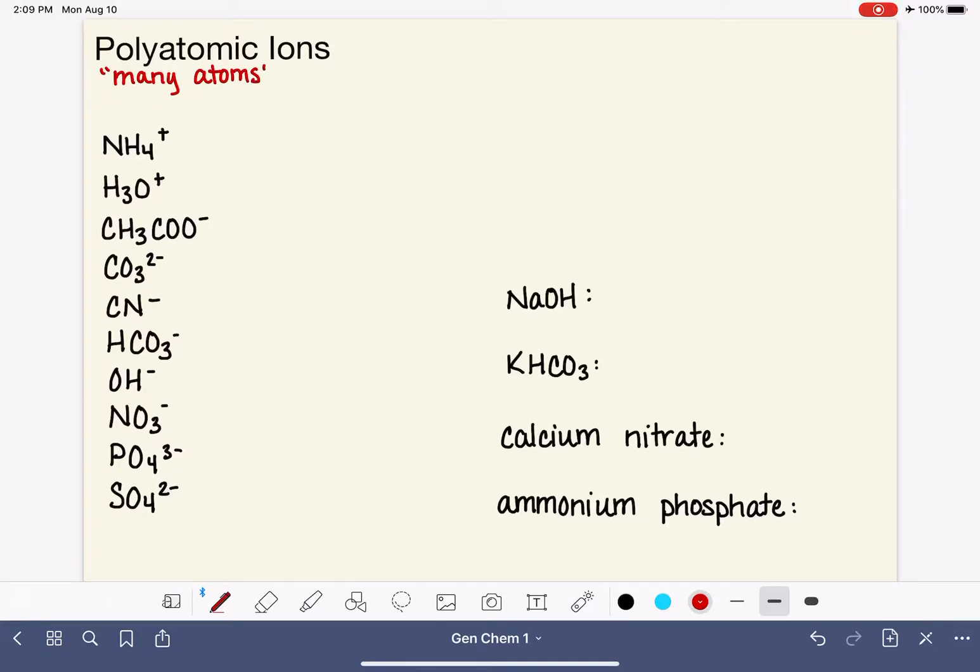So a polyatomic ion is an ion, a charged particle, that is made up of many atoms. Here is a list of the most common polyatomic ions. You can see that they all have charges on them because they are all ions. They're all charged particles, and they all contain at least two atoms. Like this first one contains a total of five atoms, one nitrogen and four hydrogens.